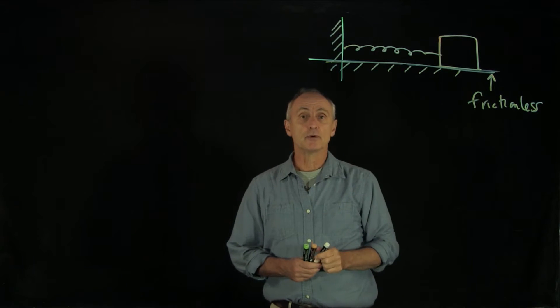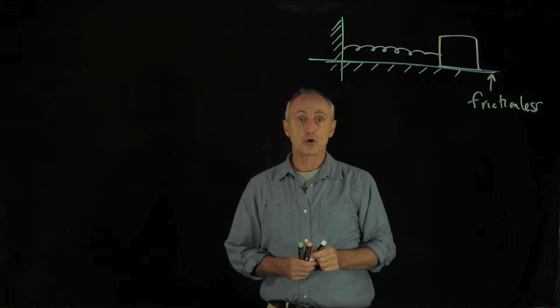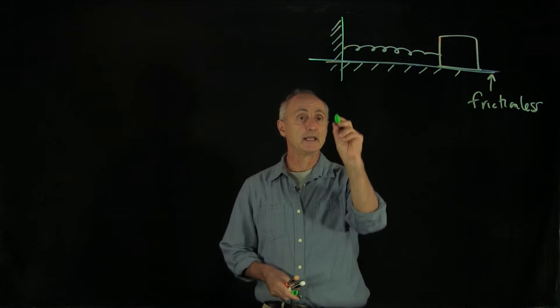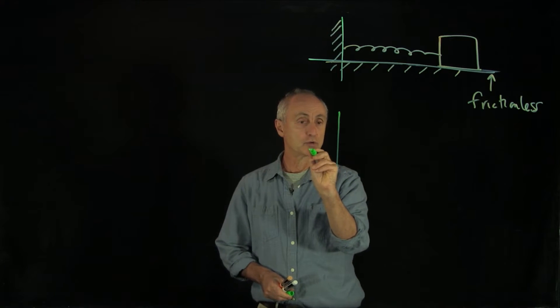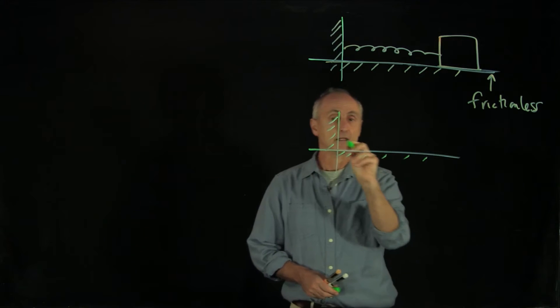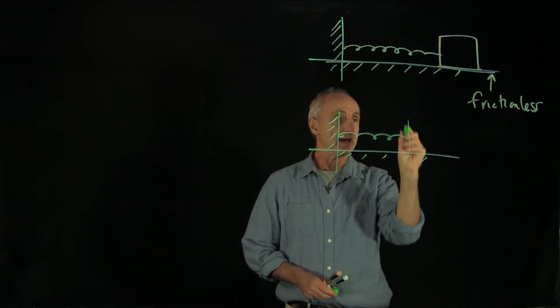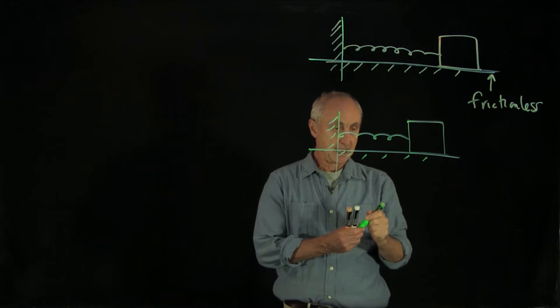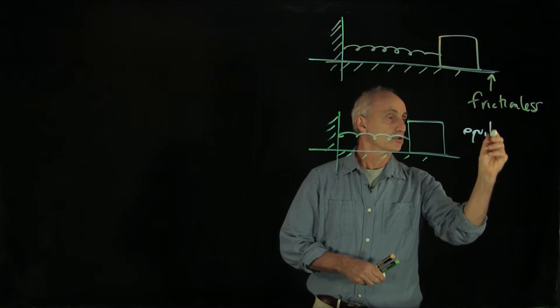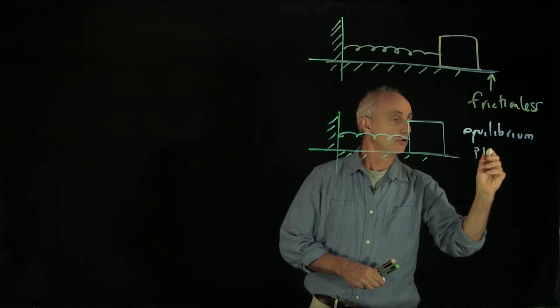The way we'd like to analyze this is by drawing two pictures. Our first picture will have the spring at an equilibrium picture. So let's draw the wall again, and let's draw the spring and our object. This is called the equilibrium picture.